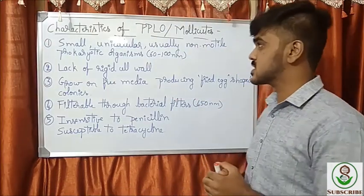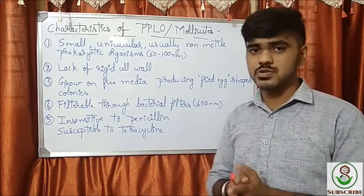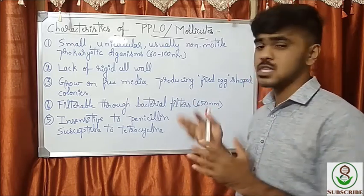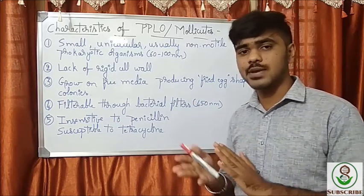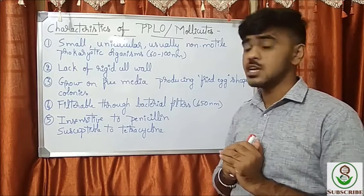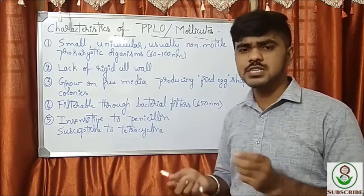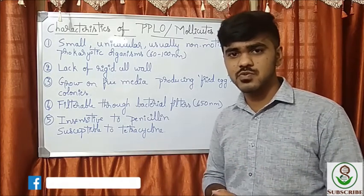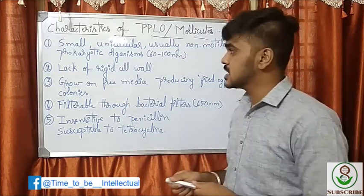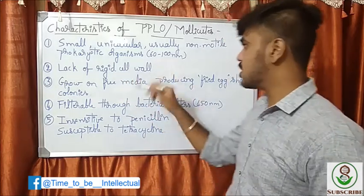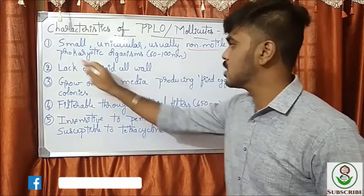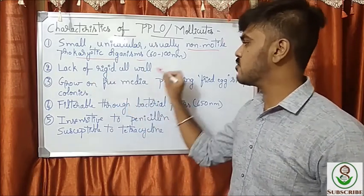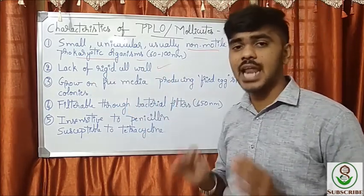Now let's see a few characteristics of PPLOs, or mycoplasmas. In plants we call them Pleuro-pneumonia Like Organisms, simplified as PPLOs. They are small, unicellular, usually non-motile, prokaryotic organisms, and they lack rigid cell walls.